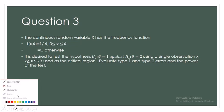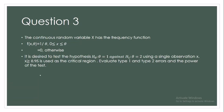Today we will be dealing with another question regarding the evaluation of Type 1 and Type 2 errors. The continuous random variable x has the frequency function f(x, θ) = 1/θ, where x ranges from 0 to θ, and 0 otherwise. It is decided to test the null hypothesis H₀: θ=1 against H₁: θ=2 using a single observation of x, and x ≥ 0.95 is used as the critical region. We are asked to evaluate Type 1, Type 2 errors and the power of the test.